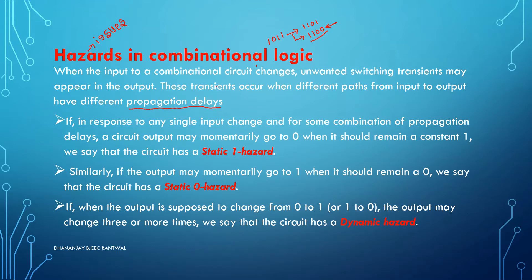Hazards in the combinational logical circuit are divided into three kinds. The first hazard is called static 1 hazard, the second is called static 0 hazard, and the third one is called dynamic hazard. Based on the behavior of the circuit you will be able to identify which type of hazard the circuit is exhibiting.